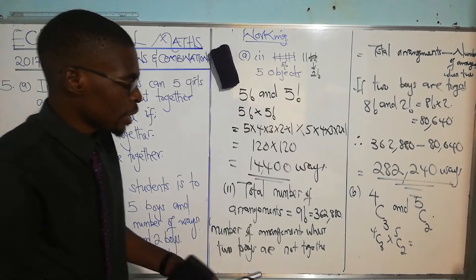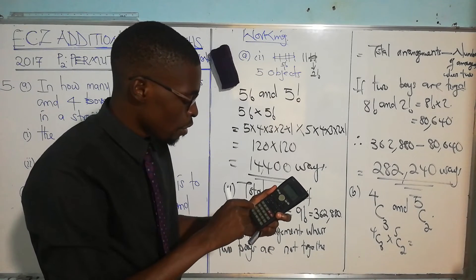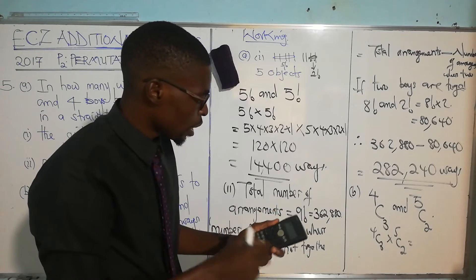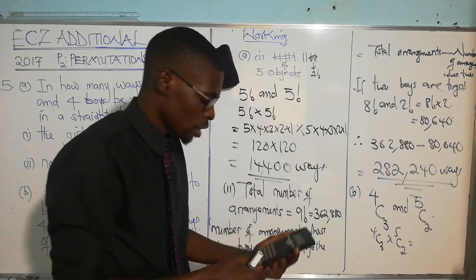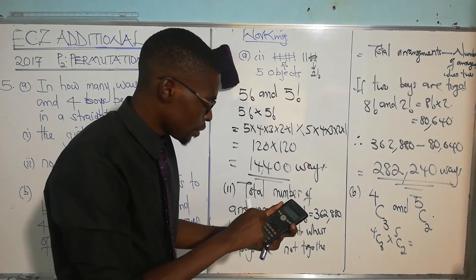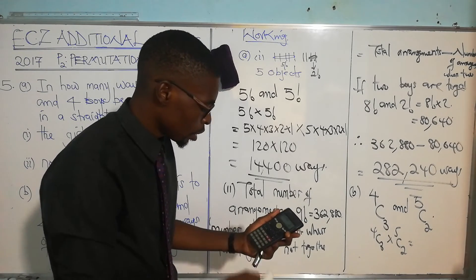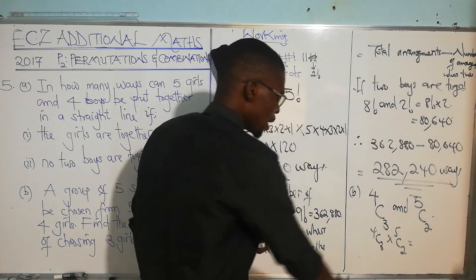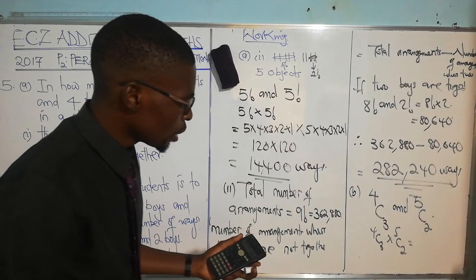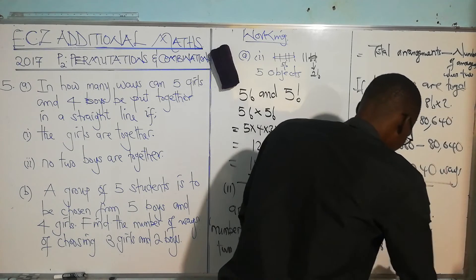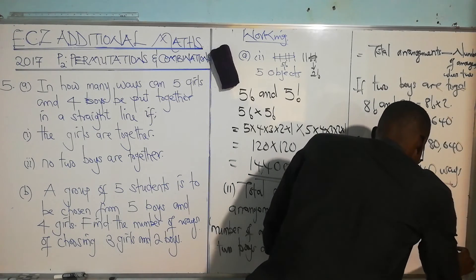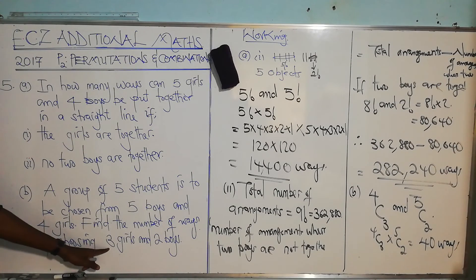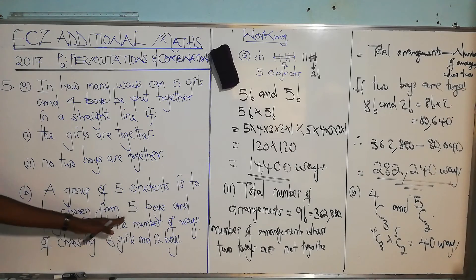On your calculator, the combination operator is available. C(4,3) = 4 and C(5,2) = 10. So the total number of ways = 4 × 10 = 40. We can have 40 ways of choosing three girls and two boys from a group of five boys and four girls to form a group of five students.